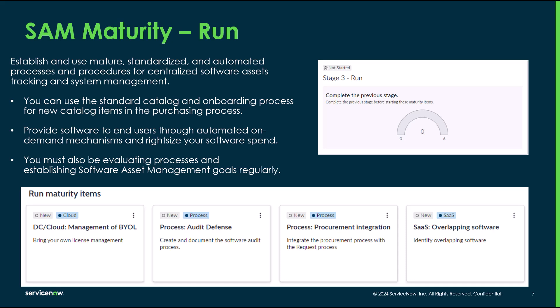The last phase is the run phase. This is where you're really mature — you have standardized and automated your processes. You may want to start doing more centralized asset tracking and system management, using standard catalog items, integrating the onboarding process for new catalog items, and getting that integration with your procurement system working so you don't have to swivel chair anymore. You might also want to provide users an automated way to deploy software and really right-size your software spend. This is where you really want to be evaluating those processes on a regular basis and seeing how they line up with your goals.